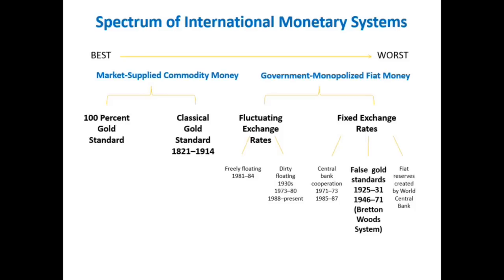But the key here is that all the systems to the right are government monopolized fiat money. There's even the Keynesian ideal, which is fiat reserves created by a world central bank — that's what Keynes himself would have liked to have seen.